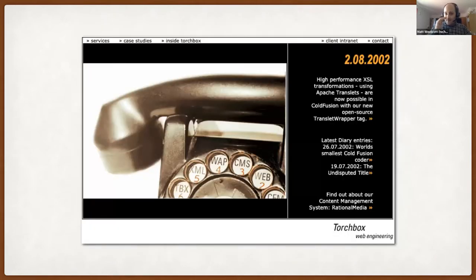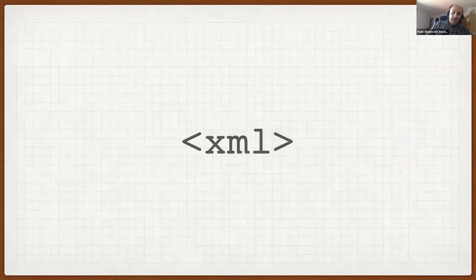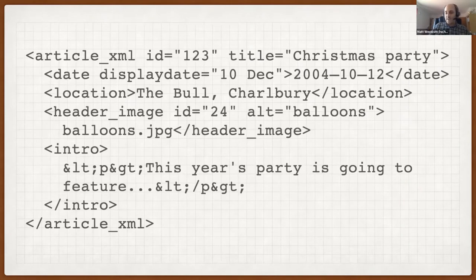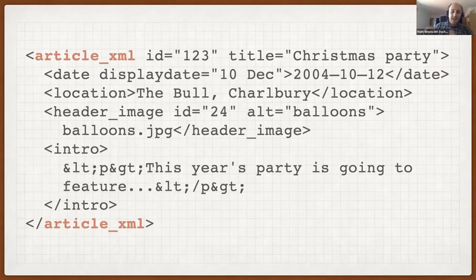The story begins further back than you might expect, in the early 2000s, when a trendy young agency called Torchbox had a proprietary CMS like every other trendy young agency. Ours was called Rational Media and was written in ColdFusion — ask your grandparents. Rational Media was powered by XML because XML was the cool technology of the time; it was basically the blockchain of its day. What XML gave us was not being tied to a fixed database schema, by storing page content in an XML structure — and yes, it was called article XML.